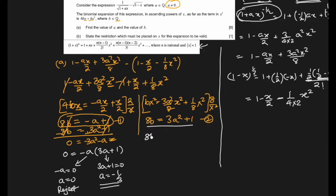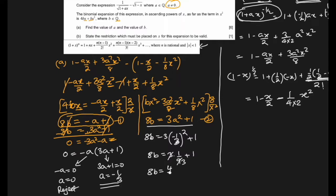Using a = -1/3 to find b: 8b = 3a² + 1 = 3(1/9) + 1 = 1/3 + 1 = 4/3. Dividing both sides by 8: b = (4/3)/8 = 1/6. So a = -1/3 and b = 1/6.